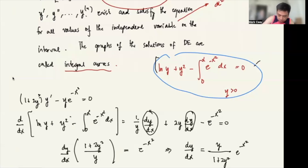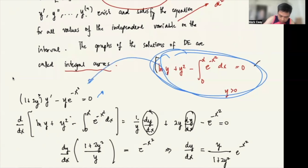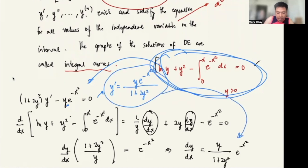Comparing this with the original differential equation, if we solve for y prime, we get y prime equals positive y·e^(−x²) all over (1 + 2y²). So that is the intuition of the solution to differential equations.